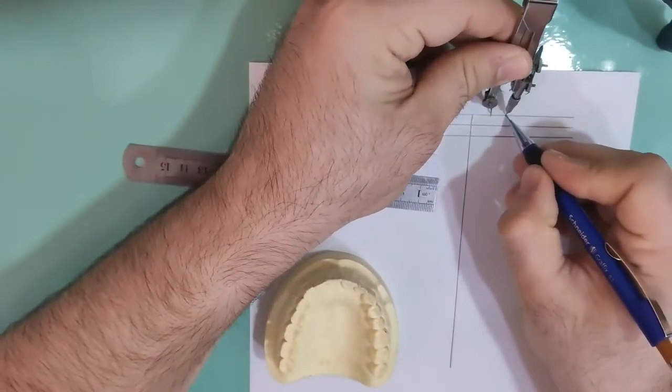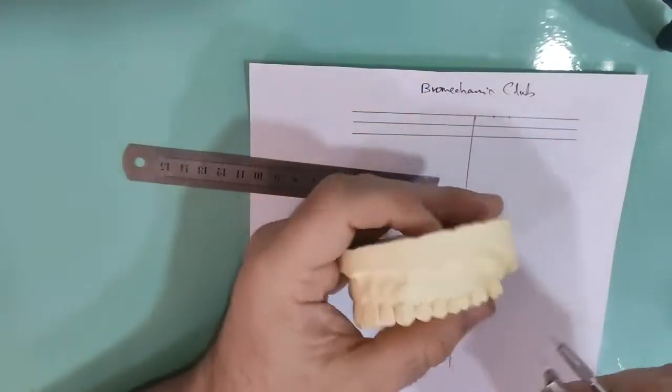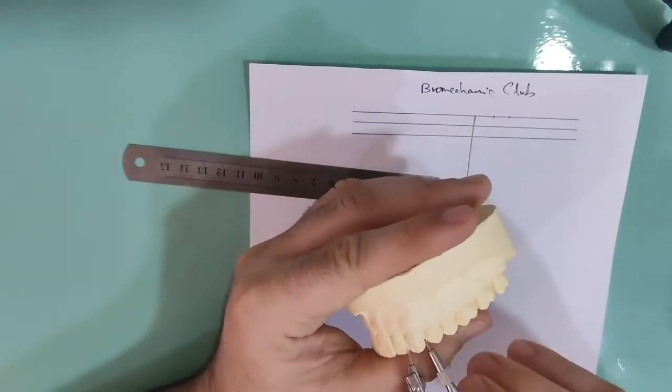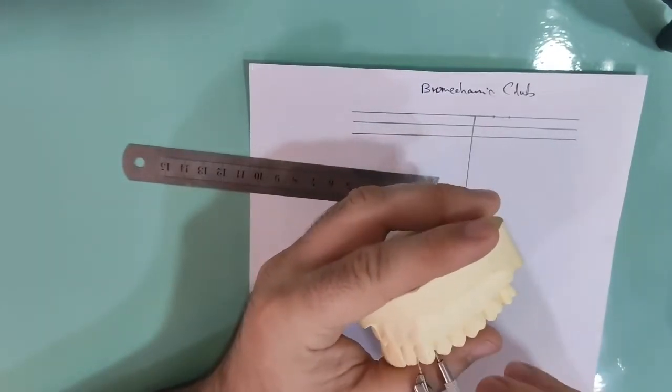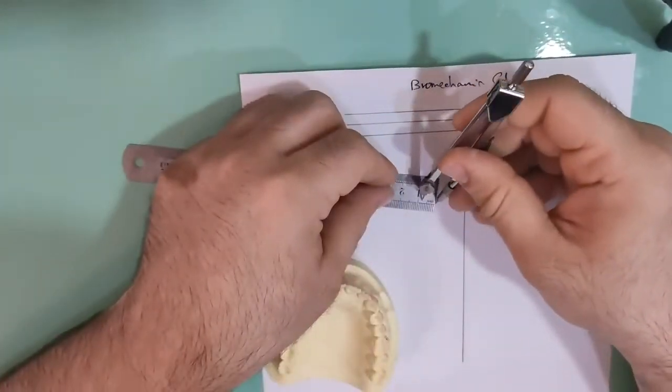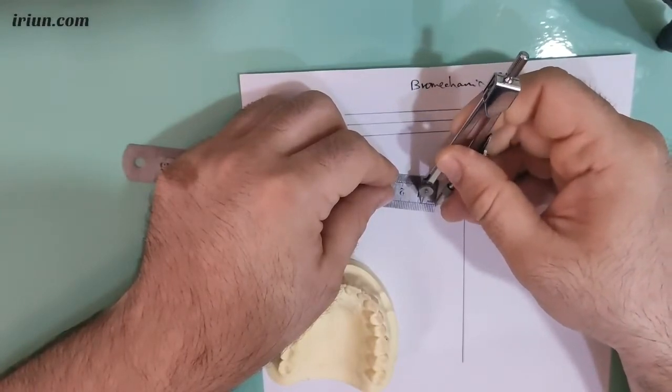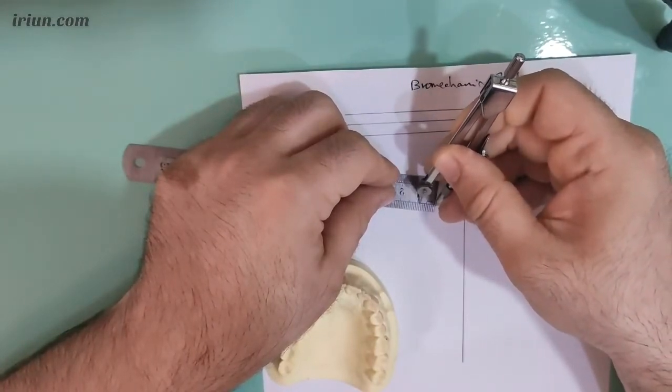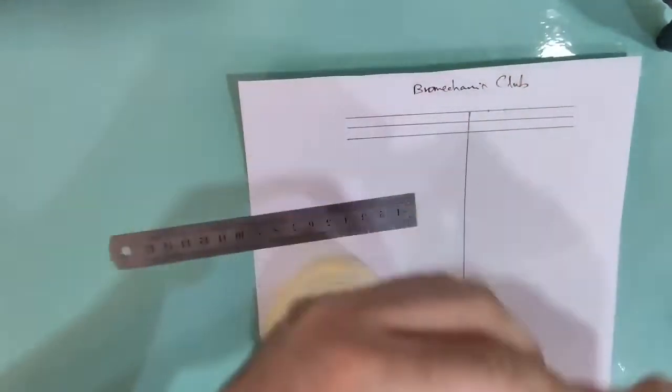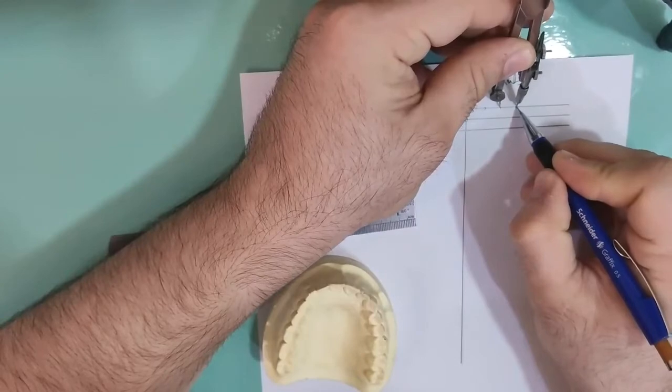We draw a point on this line. Finally, we measure the measured distal width of K9, and we have here eight. We add one millimeter, so it's nine millimeter. And draw a point here.